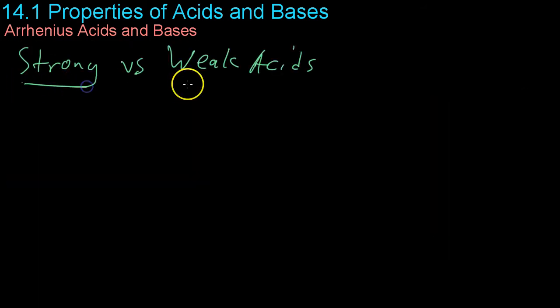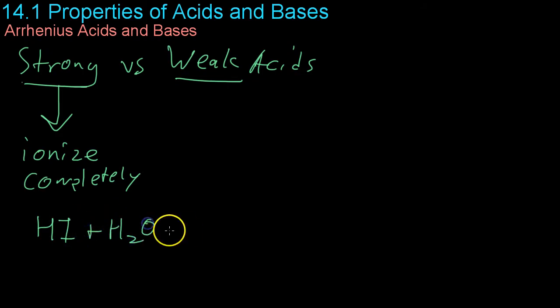Now we have to talk about the difference between strong and weak acids so strong acids are acids that ionize completely in solution. For example if you were to take hydroiodic acid and put it in a solution of water it would dissolve completely into the hydronium ion and the negative iodine ion. As long as the solution wasn't saturated there would be no remaining hydroiodic acid.